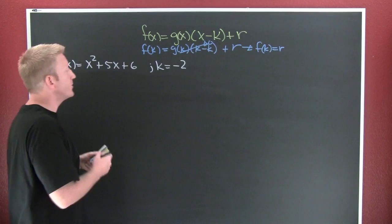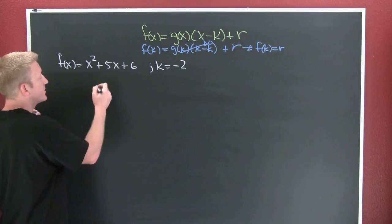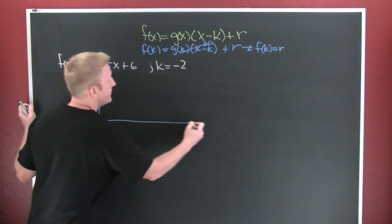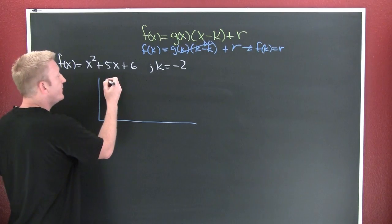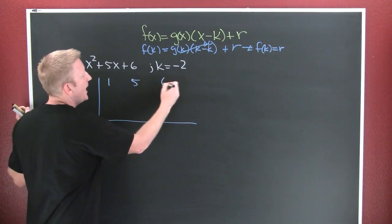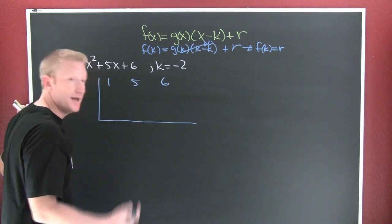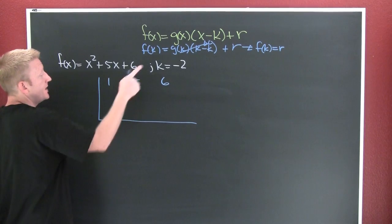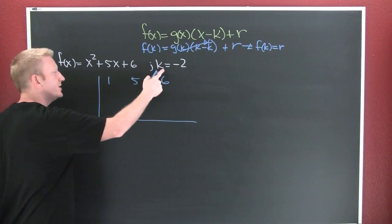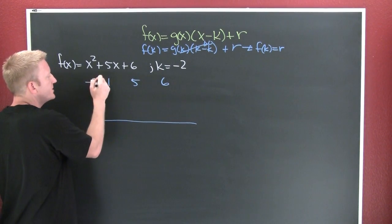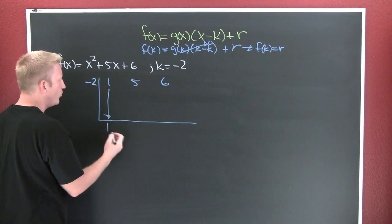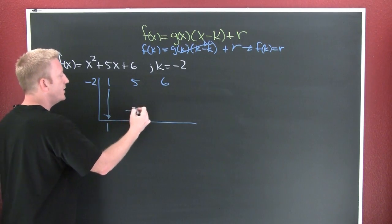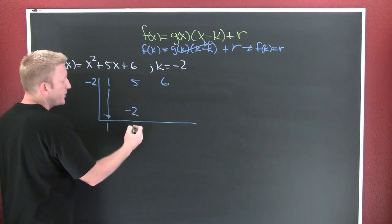So now we're trying to evaluate this function. We can use synthetic division because this is a special linear factor. In synthetic division, what goes on the inside? The coefficients: one, five, and six. What comes on the outside? We put a minus two on the outside. Then we bring down that one, multiply it by minus two, that's a minus two, add to get three.